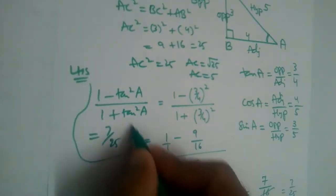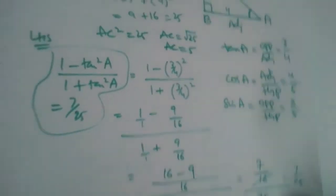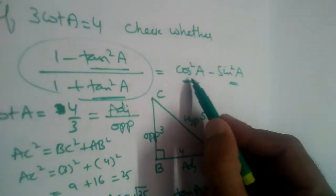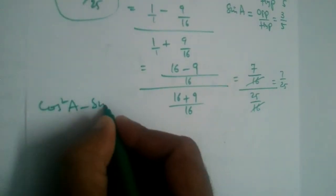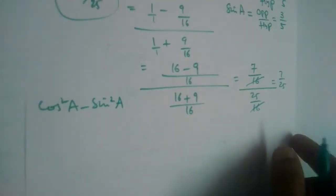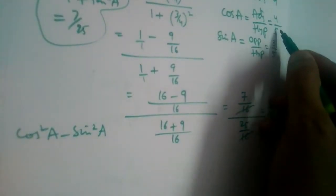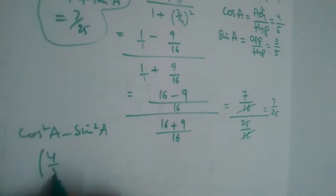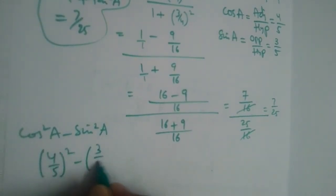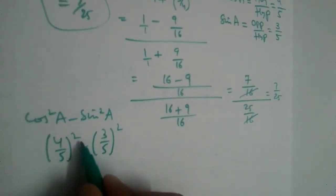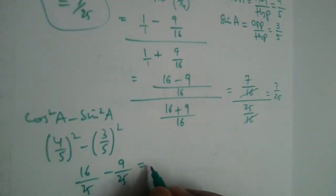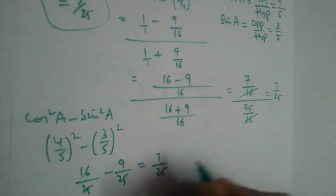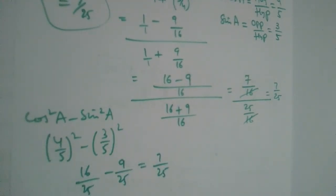Now let us find the RHS: cos²a - sin²a. We have cos(a) = 4/5 and sin(a) = 3/5. So (4/5)² - (3/5)² = 16/25 - 9/25 = 7/25. The RHS is also 7/25.